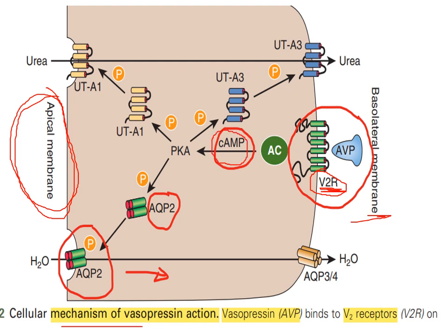Binding to the V2 receptor causes increased levels of cyclic AMP. Cyclic AMP is important for the action of AVP: V2 receptor → increased cyclic AMP → phosphorylation, synthesis, and movement of aquaporin-2 channels. Aquaporin-2 is the water channel, so these channels move to the apical membrane, causing water to be reabsorbed from the lumen back into the interstitium. For its action, we need the V2 receptor, cyclic AMP, and aquaporin-2.